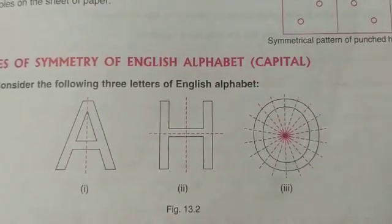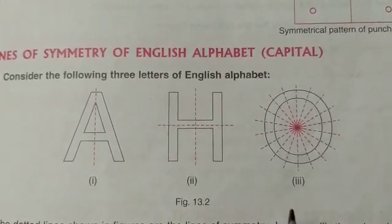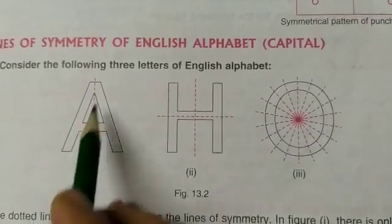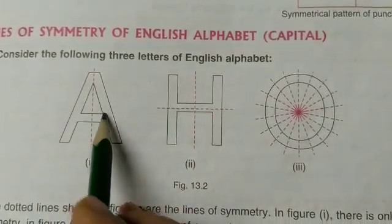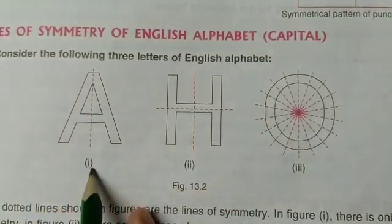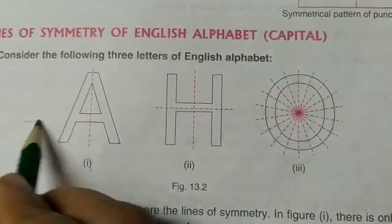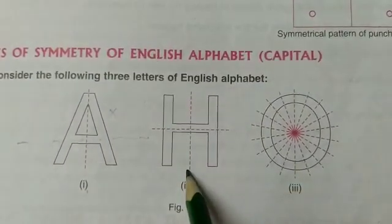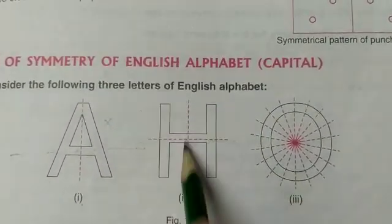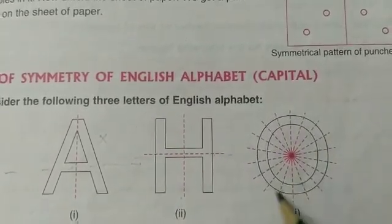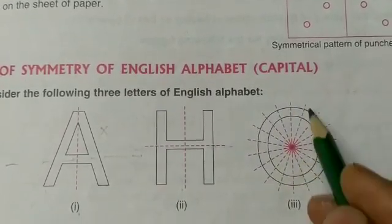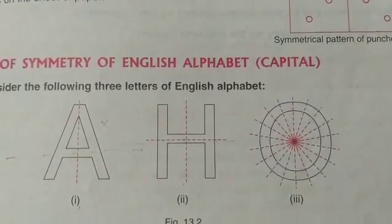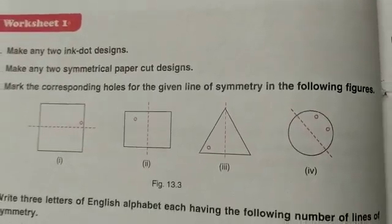You can see lines of symmetry of English alphabet capital letters. Consider letter A — as I show you on the board, it divides into two equal halves, so this is your symmetrical line. But if we divide it in another way then it will not be symmetrical. Likewise, in letter H we are having two symmetrical lines. For alphabet O, we are having many symmetrical lines.